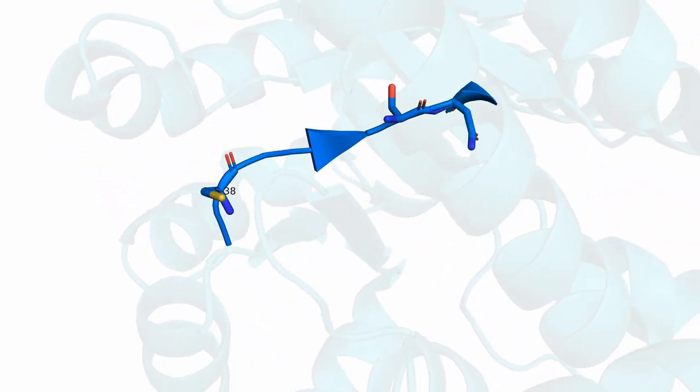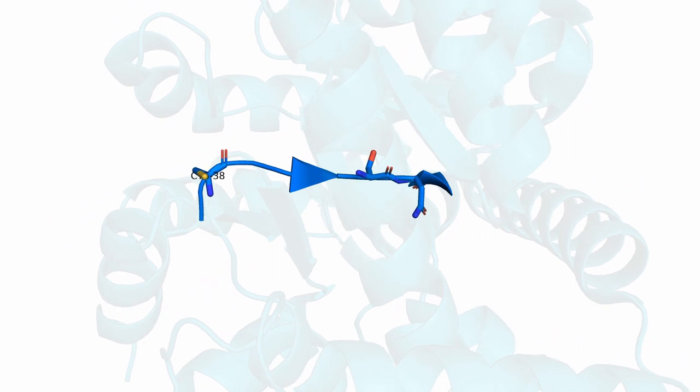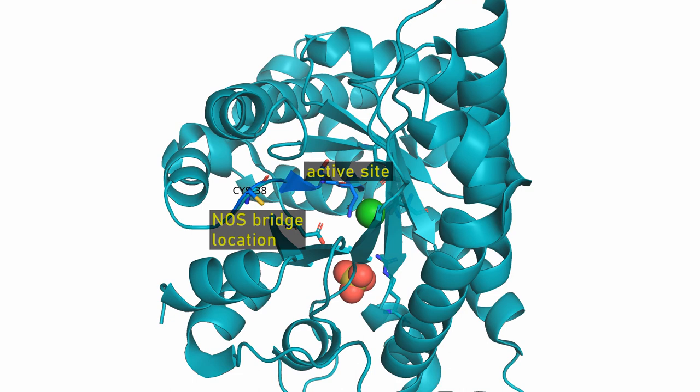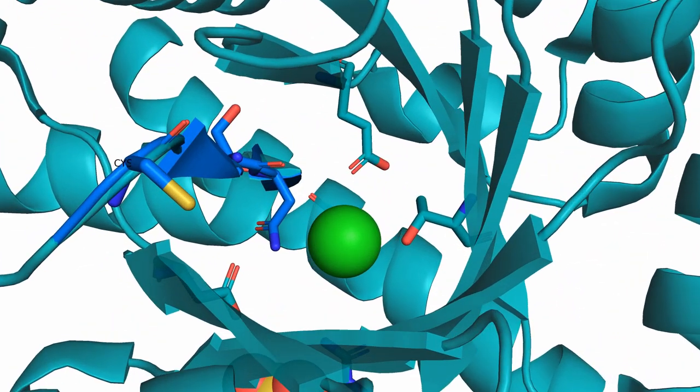The cysteine residue of the NOS bridge is part of a strand-like structure that reaches from the protein surface all the way to its active site. The structural shift of the active site may be due to the movement of this strand.